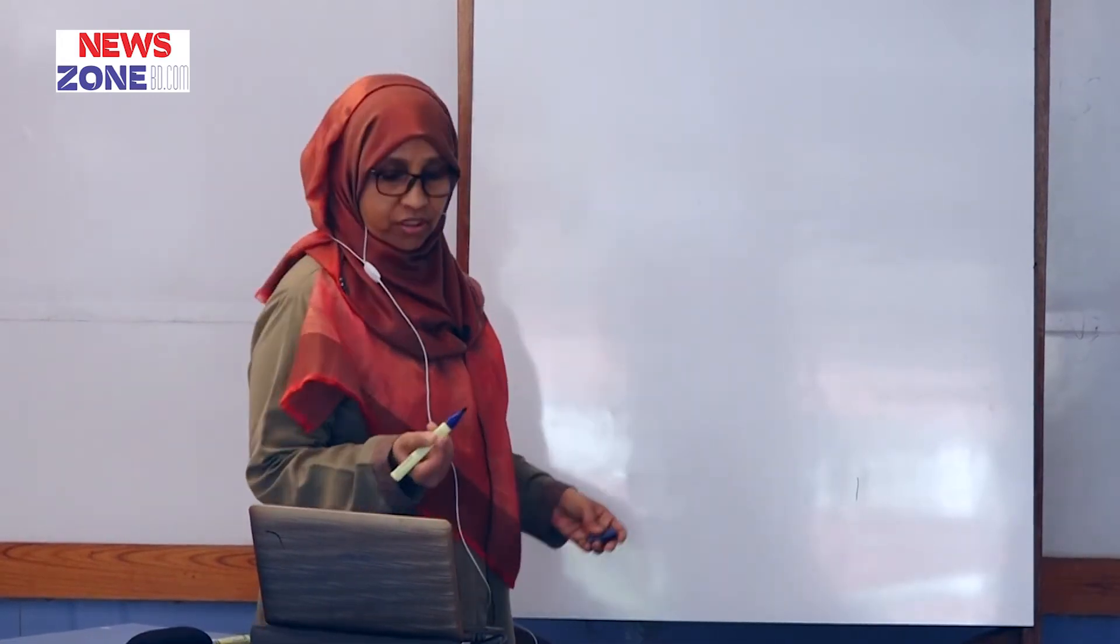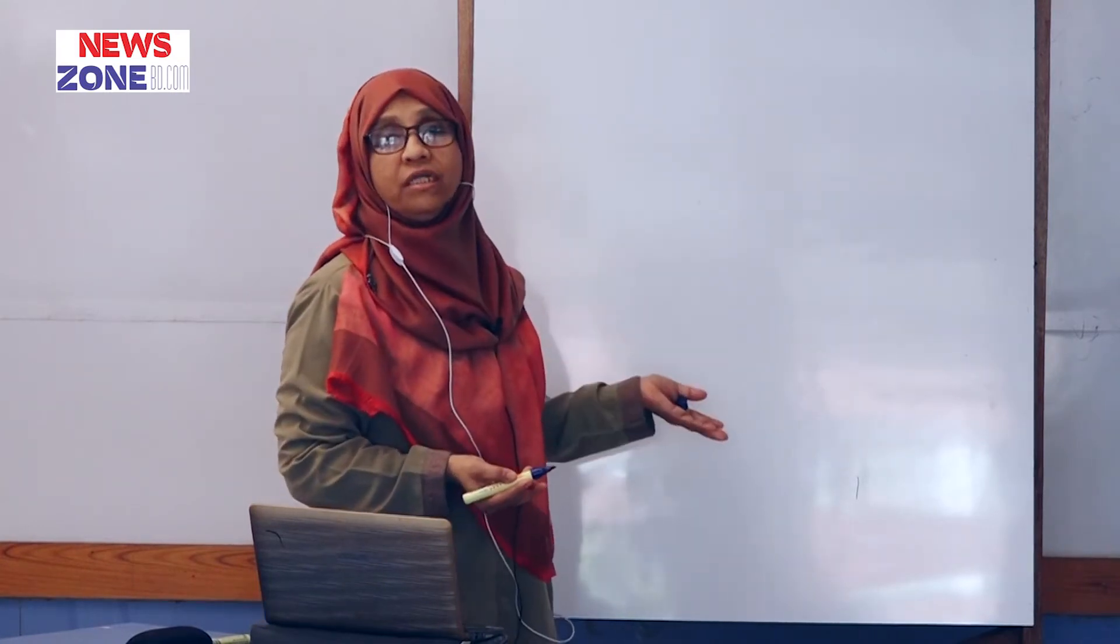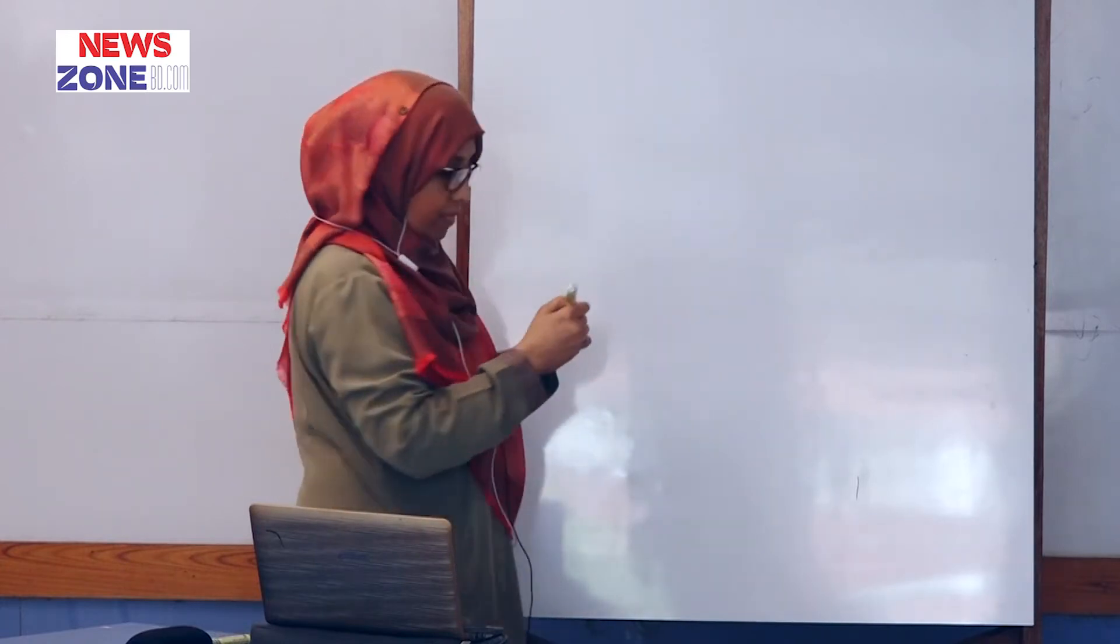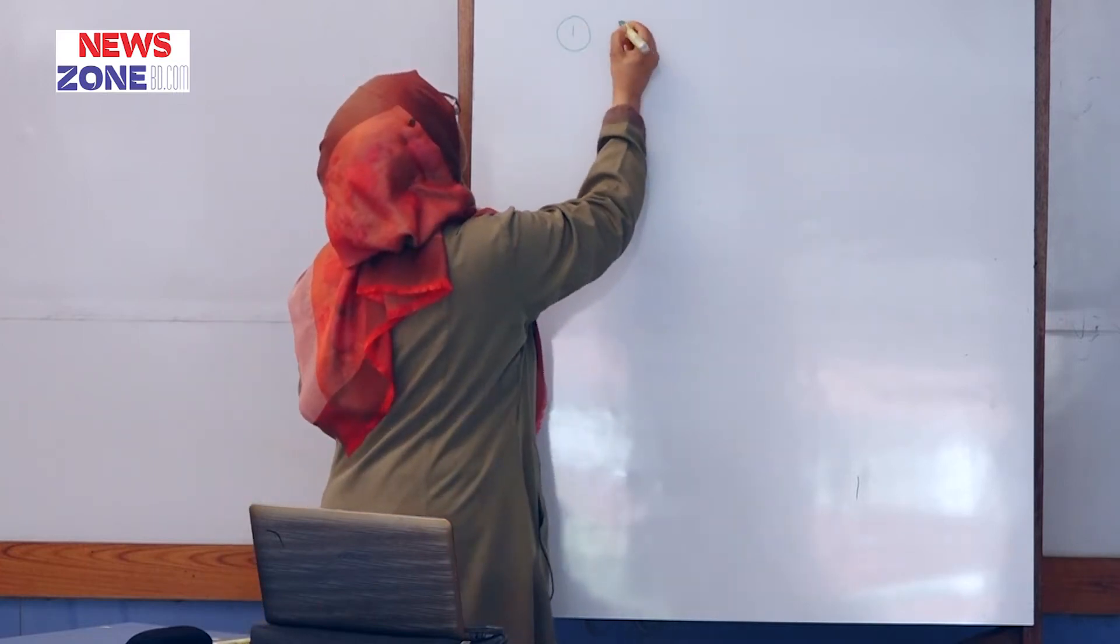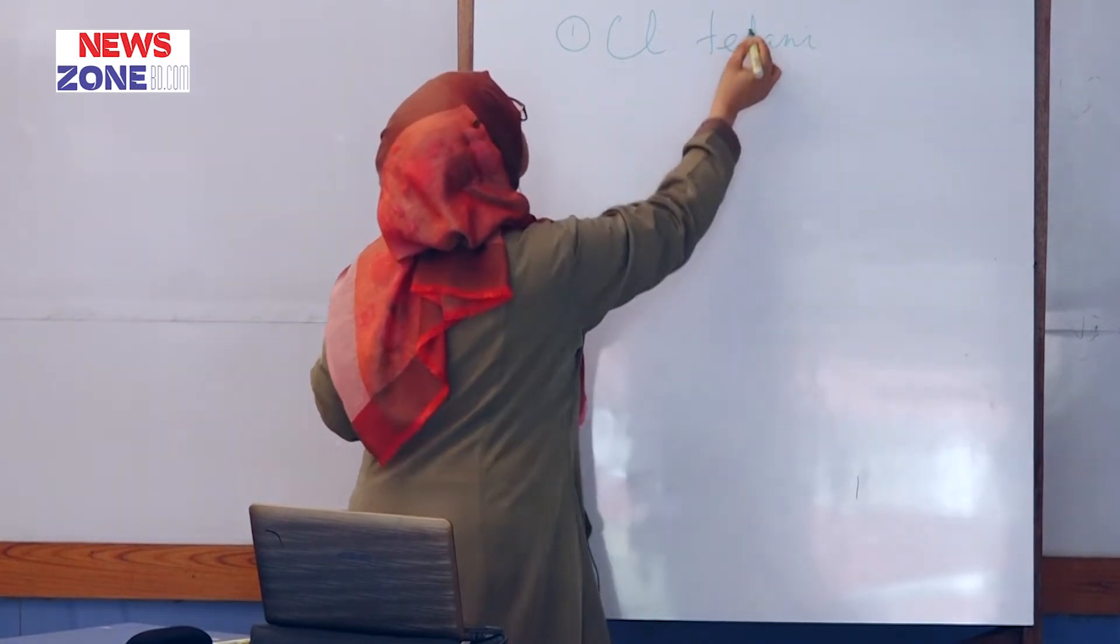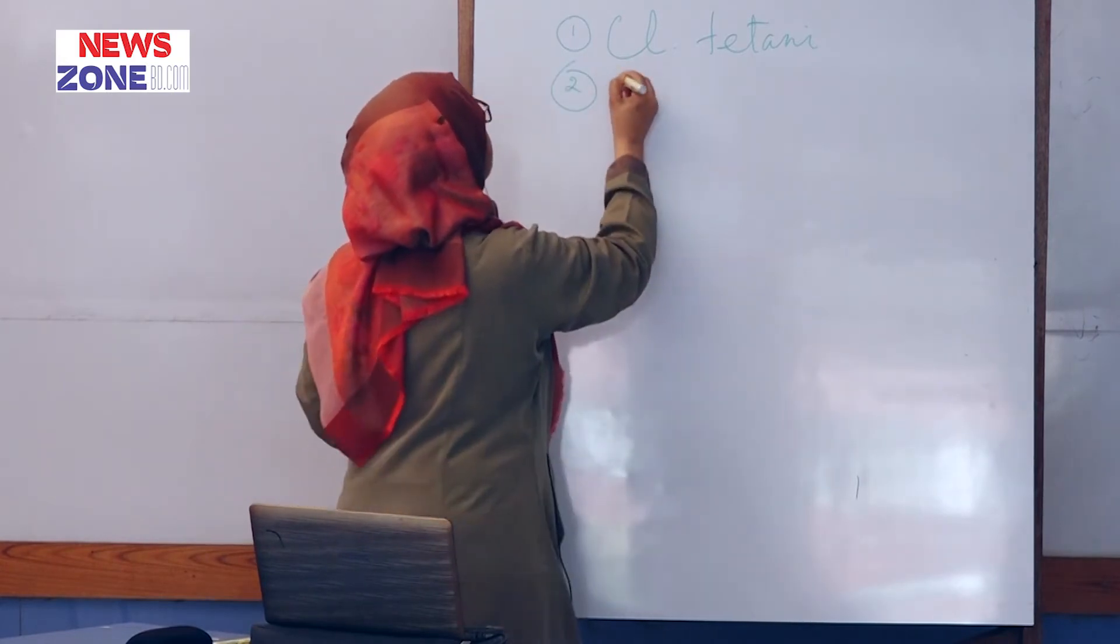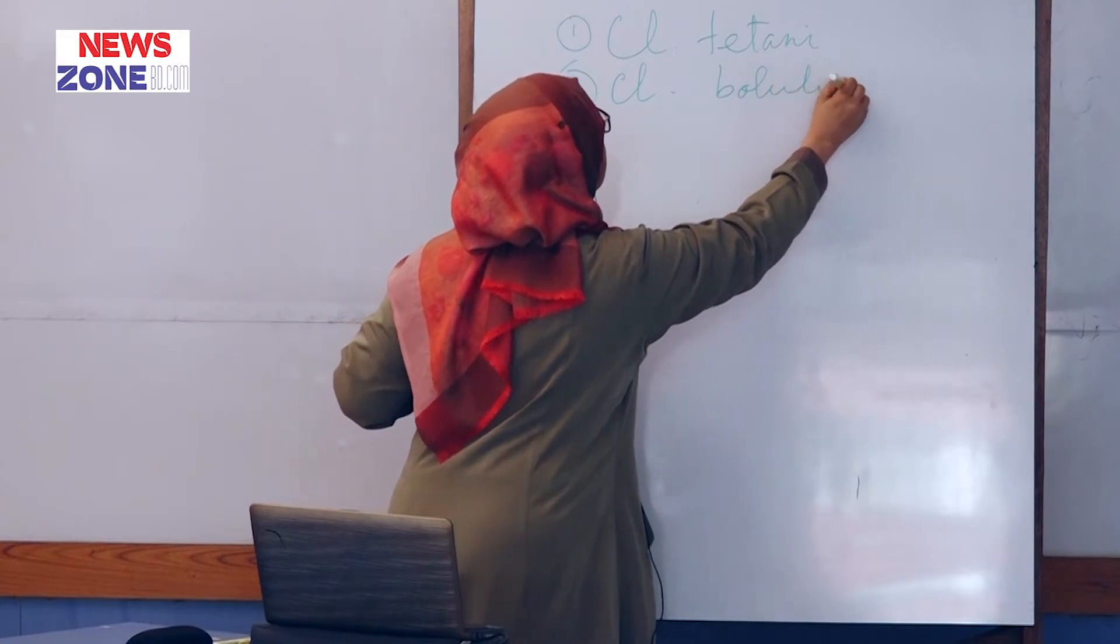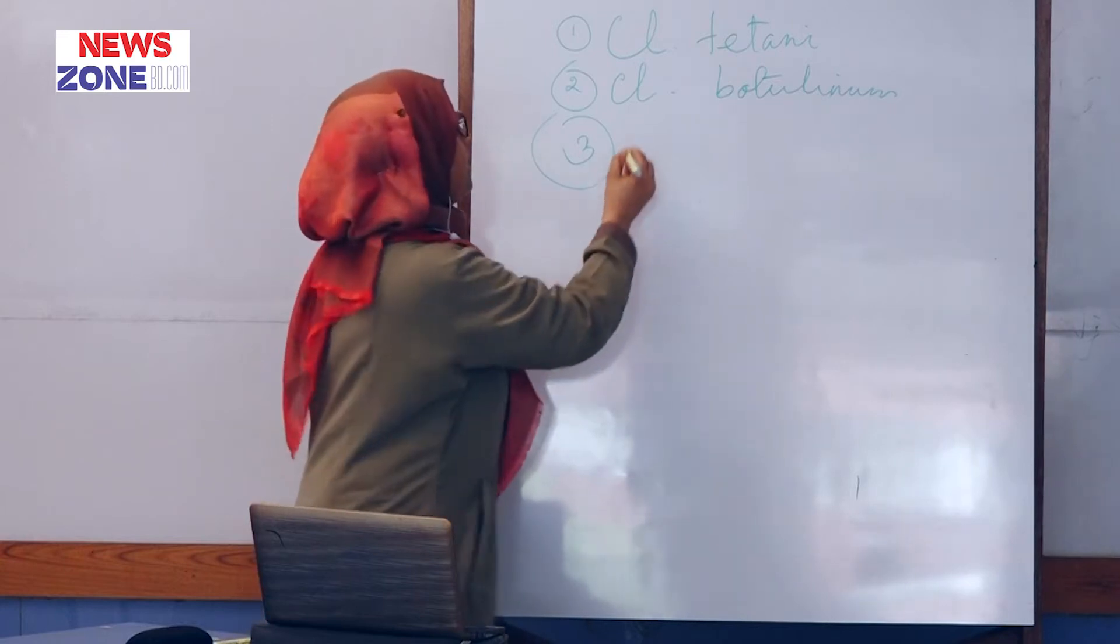Let's begin with the neurotoxins. Talking of neurotoxins, what are the bacteria that produce neurotoxins? Number one, Clostridium tetani. Number two, Clostridium botulinum, and surprisingly, number three, Shigella.